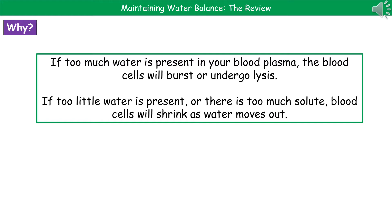On the inverse, if we've got too little water present within our blood plasma, then the blood cells are going to have the water within them drawn out into the plasma itself, so they're going to shrink and shrivel. Shrunken and shrivelled cells don't really work too well, so again we find a problem when water levels aren't right.